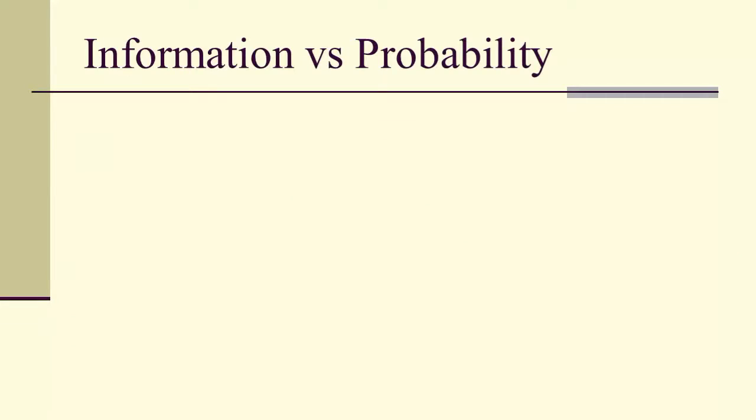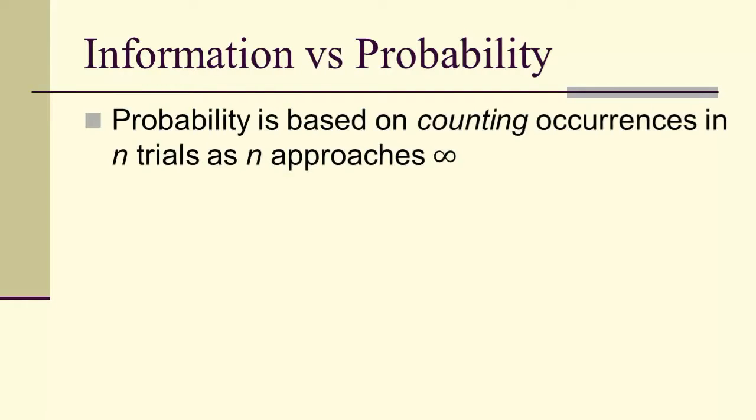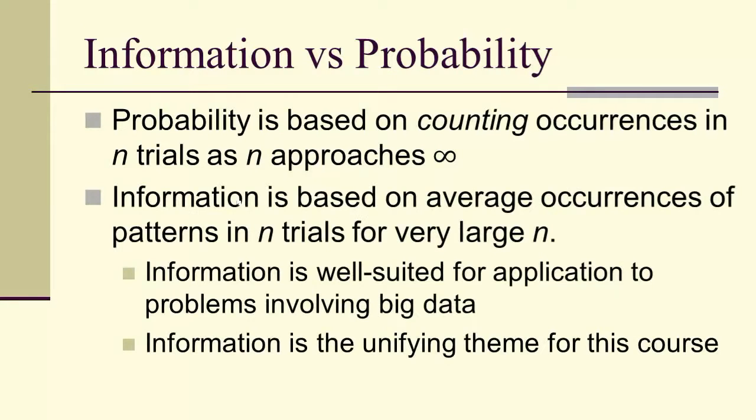Let's look at information versus probability. Probability is based on counting occurrences in N trials as N approaches infinity. Whereas in contrast, information is a way of looking at patterns—the average occurrences of patterns in N trials for very large N.